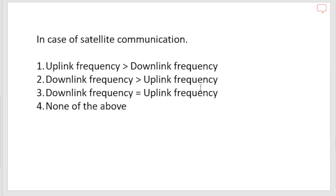The question asks about the relationship between uplink and downlink frequency. The options are: uplink frequency greater than downlink, downlink greater than uplink, downlink equal to uplink, and none of the above. The correct option is one — uplink frequency is greater than downlink frequency. We will now understand why this is so.